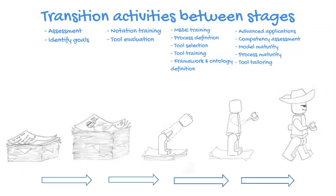When assessing where you are in terms of your MBSE capability, there are two key things to look at. First, you need to know where you sit on the MBSE slide — that's the subject of another video. Second, you need to identify which of the five evolution stages you're currently at. It's very important to be absolutely honest about your current capabilities. Only then can you come up with a plan and strategy to deploy MBSE in a rigorous, repeatable, and demonstrable manner.